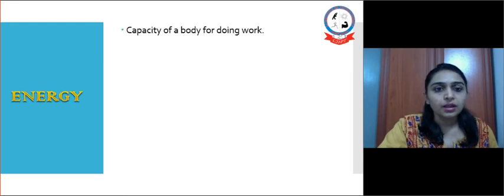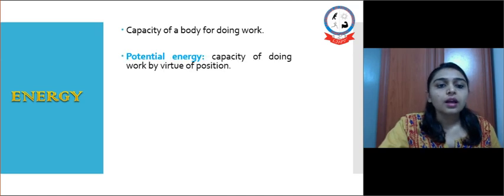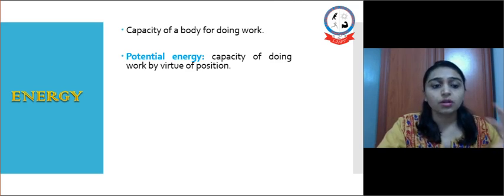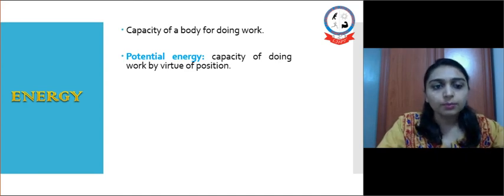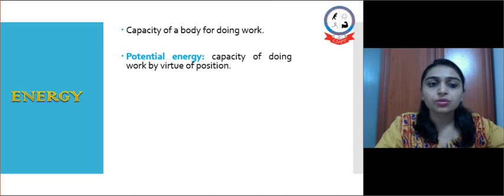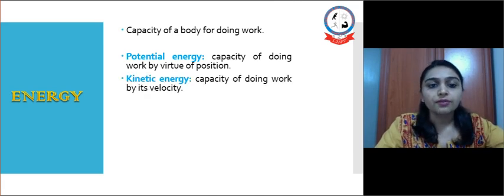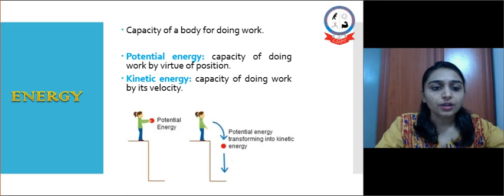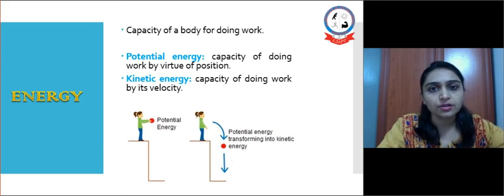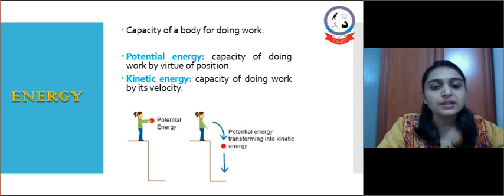Next is energy. The capacity of a body for doing work is known as energy. Potential energy is the capacity for doing work by virtue of position — maintaining a posture or position constitutes potential energy. When the capacity for doing work is by virtue of velocity, it is known as kinetic energy. For example, an object held at a certain height possesses potential energy; as it is released and falls freely, the movement occurring by its velocity is kinetic energy.